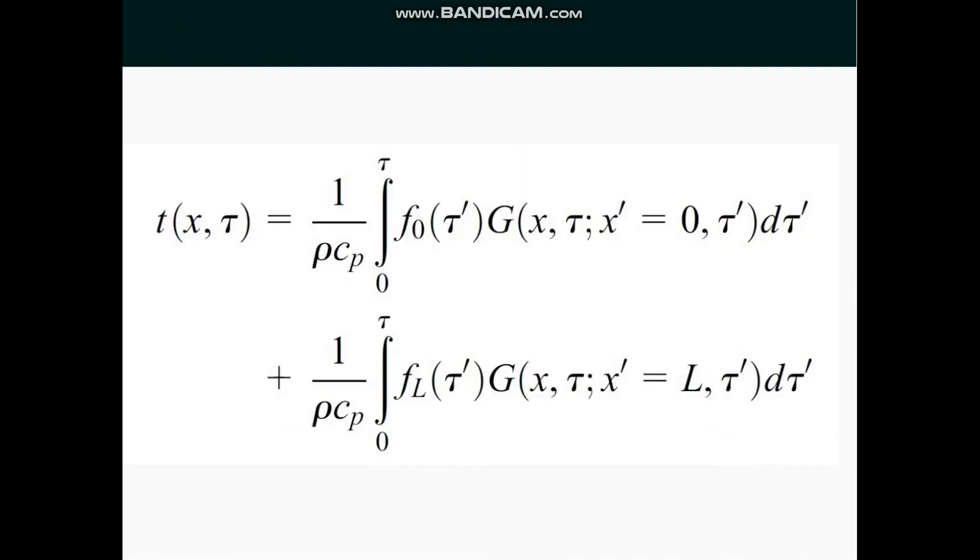Using these expressions for calculating the temperature distribution due to the two sources available inner and outer heat fluxes, we get the integrals explained in the earlier part of the video. T(x,τ) = 1/(ρcp) integral from 0 to τ of F0(τ') G(x,τ; x'=0,τ') dτ' + 1/(ρcp) integral from 0 to τ of FL(τ') G(x,τ; x'=L,τ') dτ'.